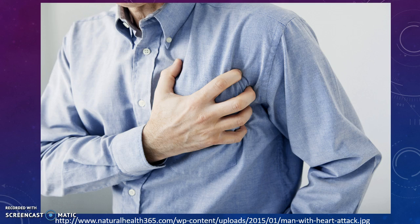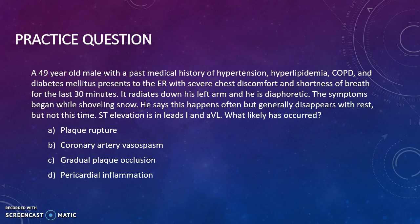It should be of no surprise that chest pain is a massive topic. We will start with the low hanging fruit and in future videos we will tackle the less well known material. Let's start with a problem. A 49-year-old man with a past medical history of hypertension, hyperlipidemia, COPD, and diabetes mellitus presents to the ER with severe chest discomfort and shortness of breath for the last 30 minutes. It radiates down the left arm and he is diaphoretic. The symptoms began while shoveling snow. He says this happens often but generally disappears with rest, just not this time. ST elevations are in leads 1 and AVL. What has likely occurred?